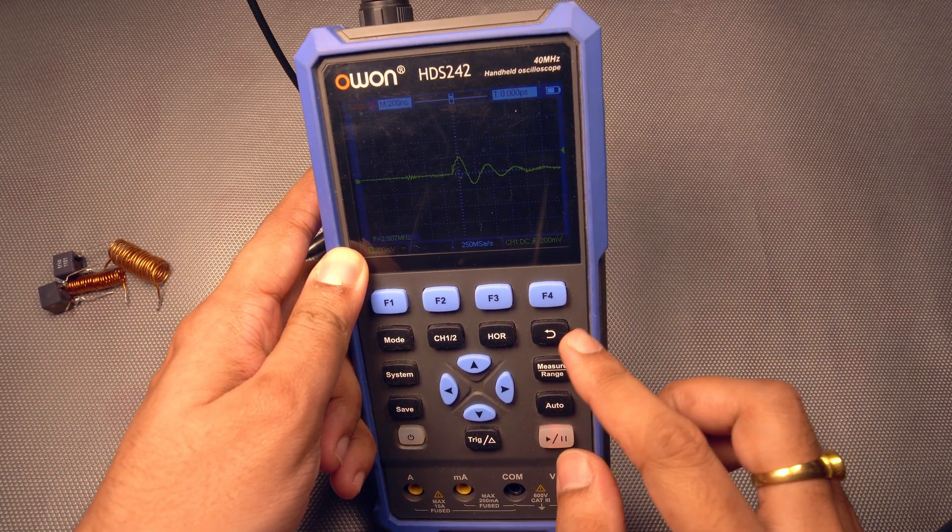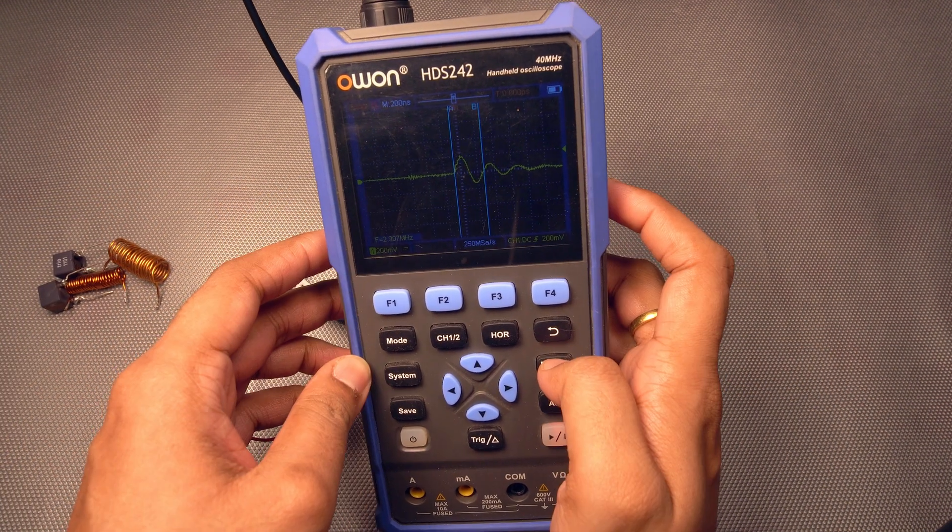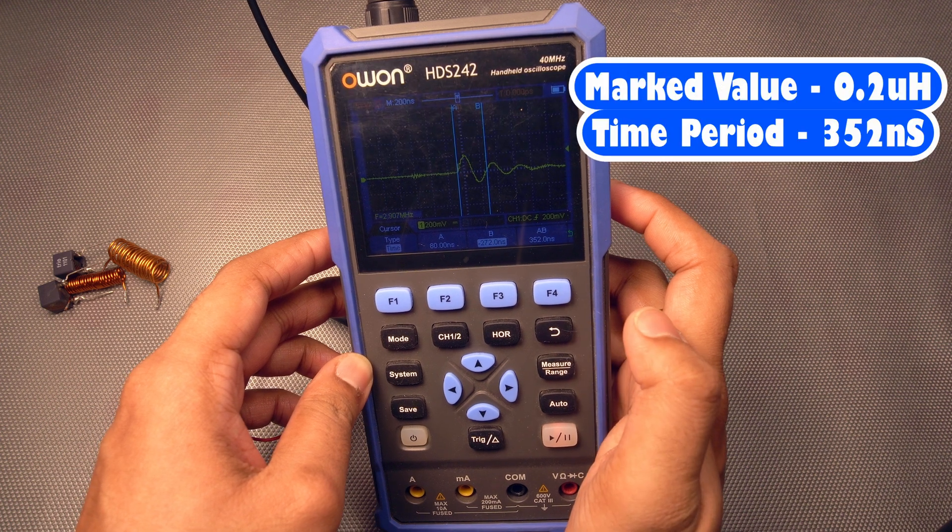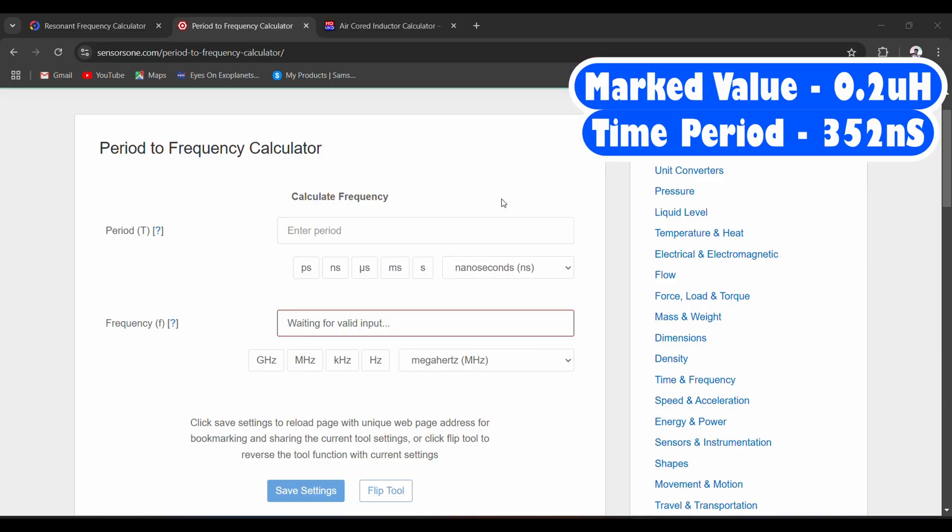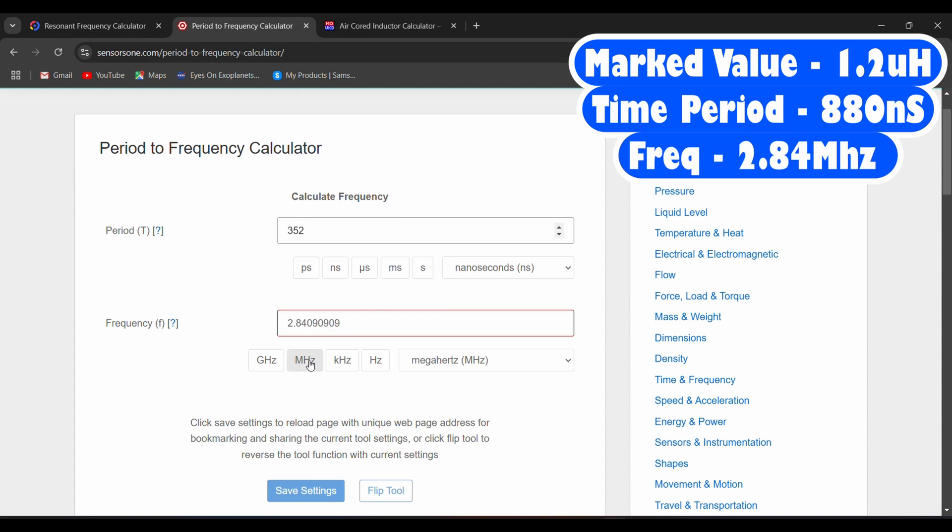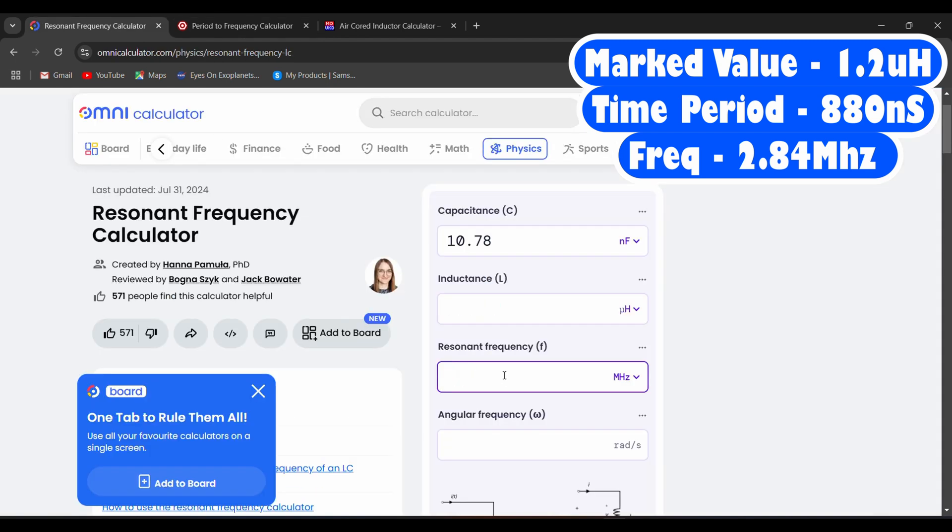But we can still measure it. So the value came to be 352 nanoseconds. And now if I put the value in here, 352, that's 2.84 megahertz. We will put 2.84 here.